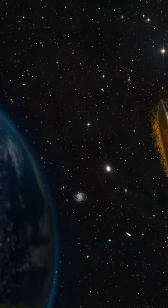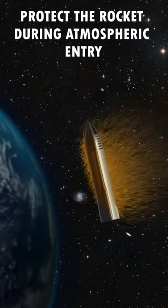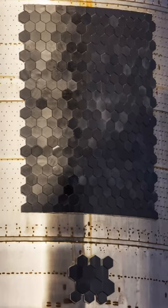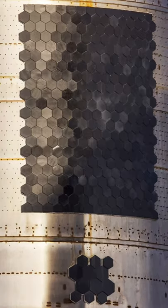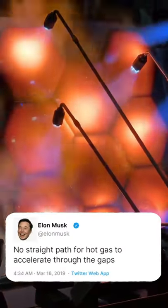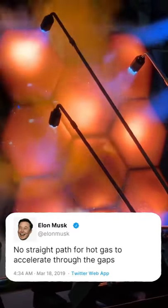These heat tiles are designed to protect the rocket during atmospheric entry. These heat tiles are attached to the stainless steel exterior of the Starship with studs. The tiles are hexagonal to ensure that there are no straight paths for hot gases to accelerate.